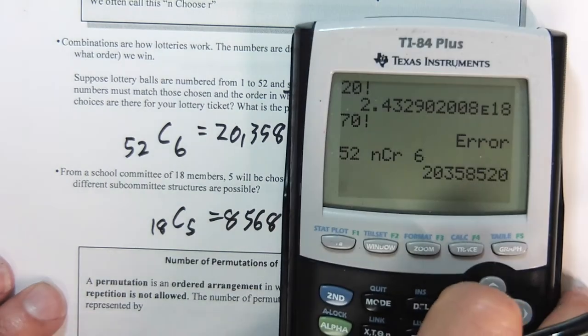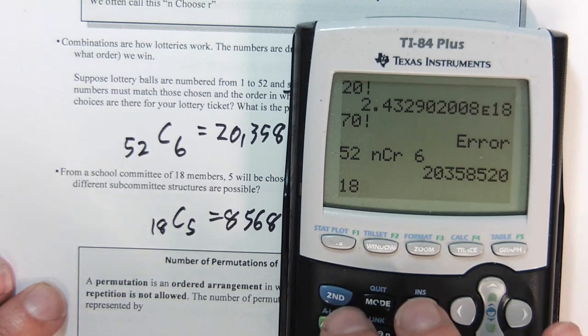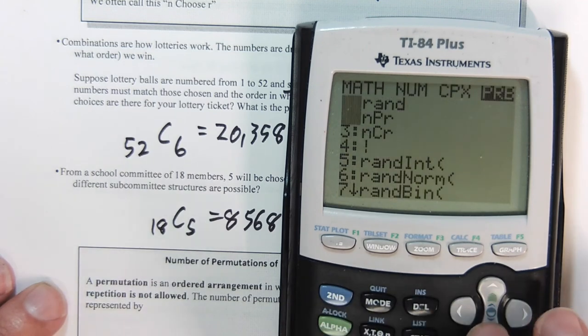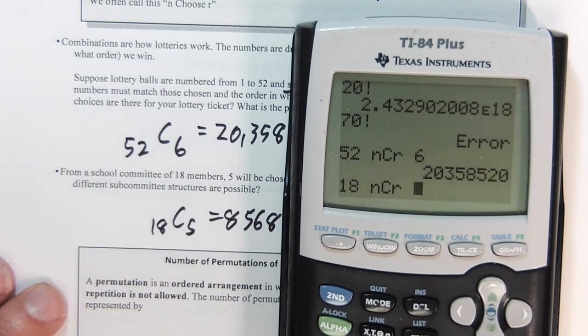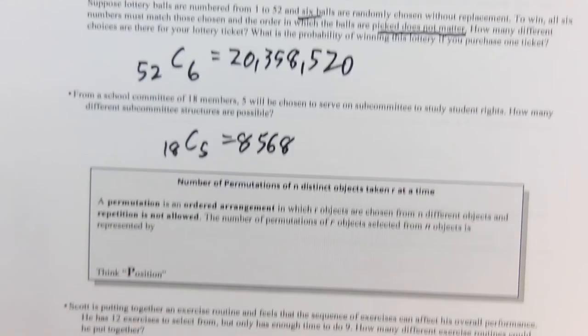TI, you're going to do the 18 first, and math, and then the 5.